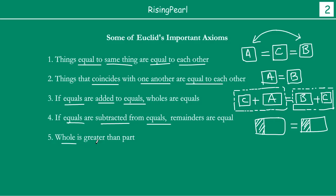Then, importantly, he said: the whole is actually greater than the part. And this is the first time, friends — the first four axioms were talking about equality — this is the first time we are talking about inequality. What Euclid said was: if you take any one thing, and as we have been discussing, this represents anything you can think of.